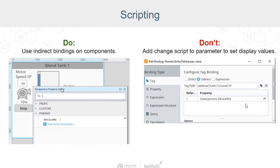If you have a consistent tag structure in place, indirect binding is going to work hand in hand with the parameters. The tag addressing will automatically be updated when a parameter value changes.